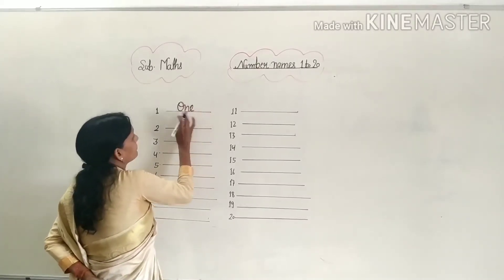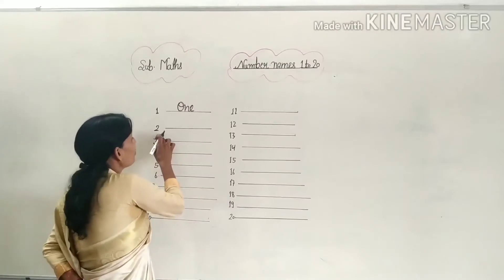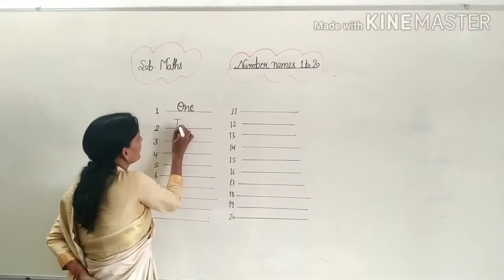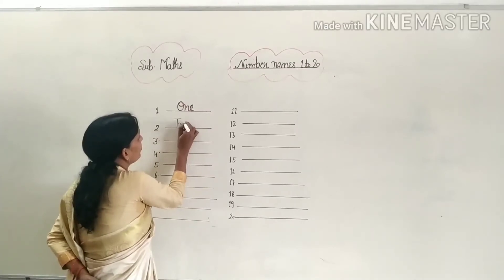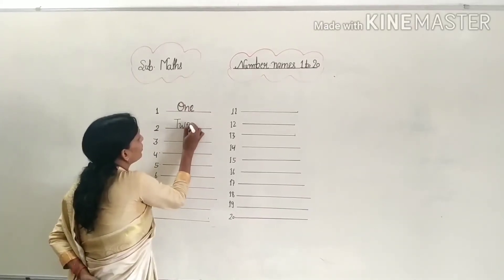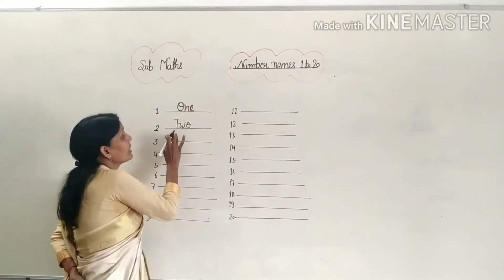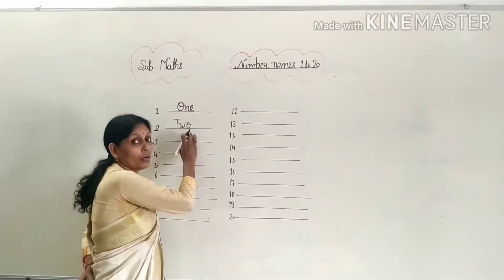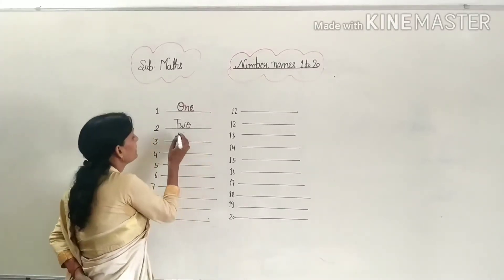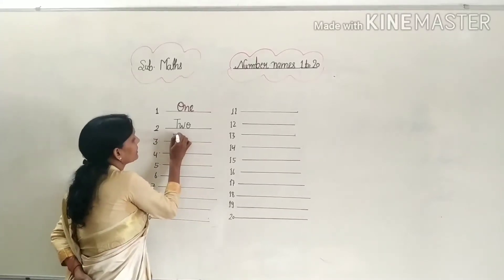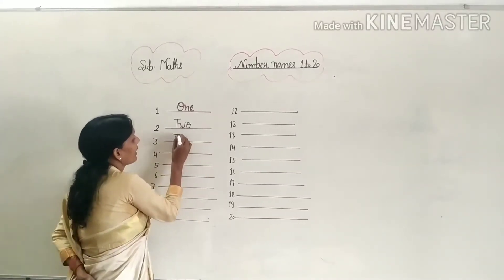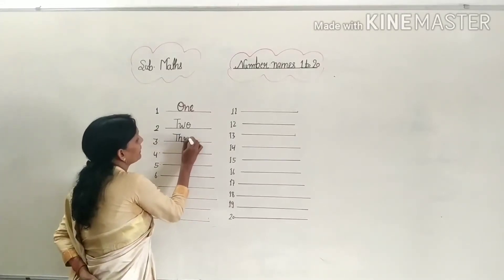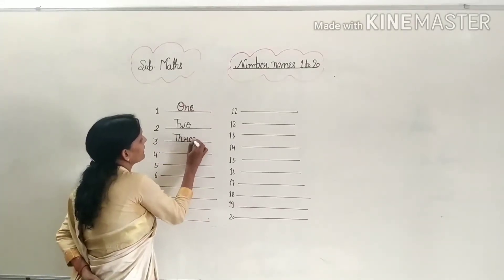And number 2. The spelling of 2 is T-W-O. T-W-O, 2. And 3: T-H-R-E-E, 3.